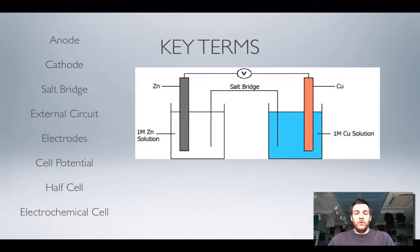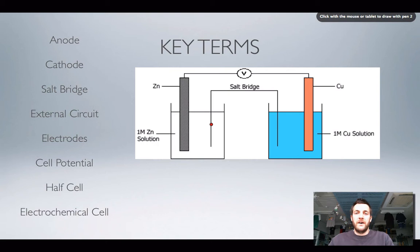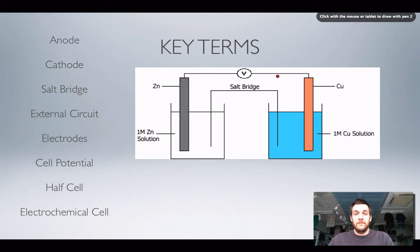When we're looking at electrochemical cells we use a number of different key terms. It's not so important that you can define these in a test or an exam, but it is important that you have some understanding of what they refer to, because quite often you're asked to label these things. Looking at a diagram of an electrochemical cell, it has a voltmeter added to it.